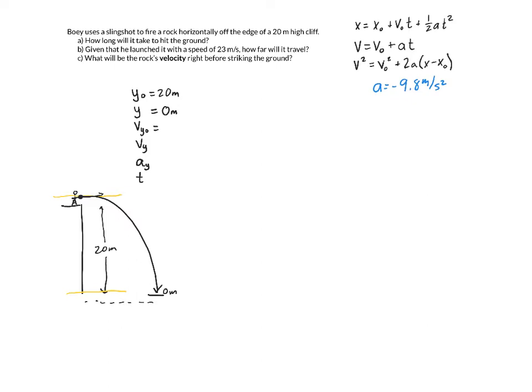So what are we given? Well, we know that initially my height is 20 meters. Notice that I did put y instead of x. The reason is the equation is x, but I am looking vertically right now. I want the time to hit the ground, which means that my final position is going to be at zero meters. The initial y velocity, if he throws it horizontally, then there is no up and down motion at the beginning. So my initial y velocity is zero meters per second. We don't know how fast it's going right before it hits the ground, but we do know the acceleration in the y direction is negative 9.8 meters per second squared.